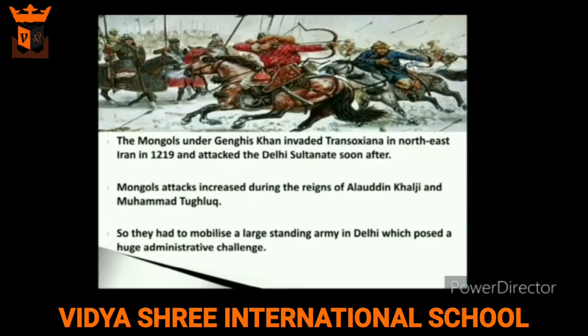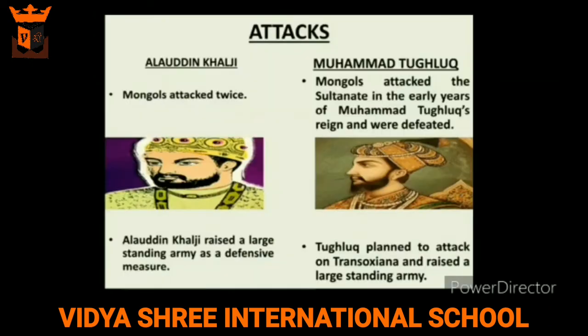The Mongols under Genghis Khan invaded Transoxiana in northeast Iran in the year 1219, and the Delhi Sultans faced their attacks soon after. Mongol attacks increased during the reigns of Alauddin Khalji and Muhammad Tughlaq, so they had to mobilize a large standing army in Delhi, which posed a huge administrative challenge as well.